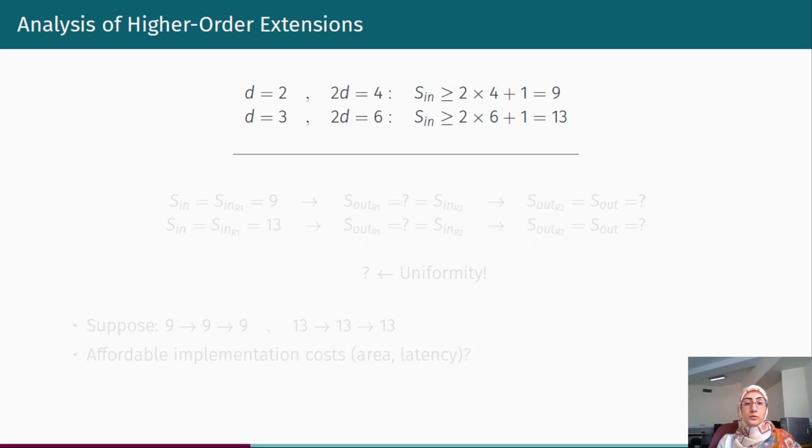Now suppose for second- and third-order securities. According to the mentioned duplication rule, the minimum number of input shares in each of these cases would be 9 and 13 accordingly. This is not a trivial task at all to find efficient and non-complete sharings for 5-bit Chi permutation with 9 and 13 input shares. And this is just in case that we do not consider uniformity challenge. If we consider uniform implementations, the problem even gets worse.